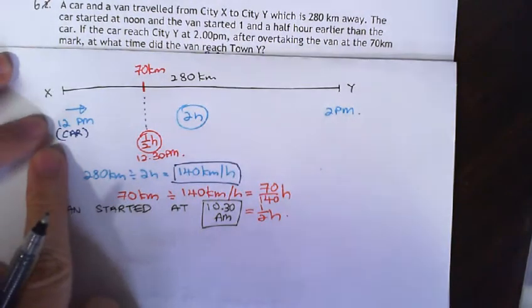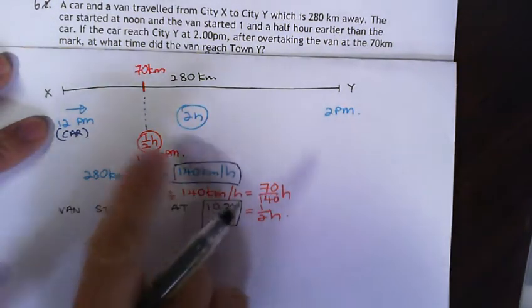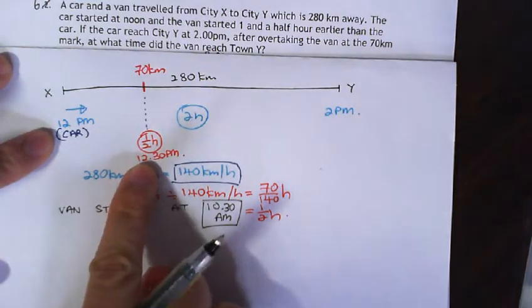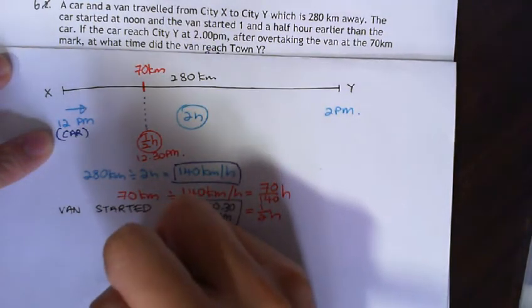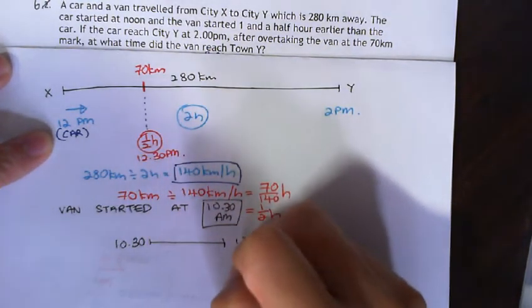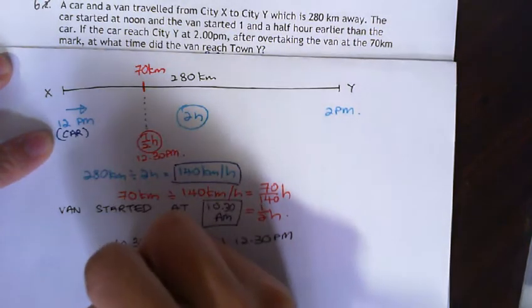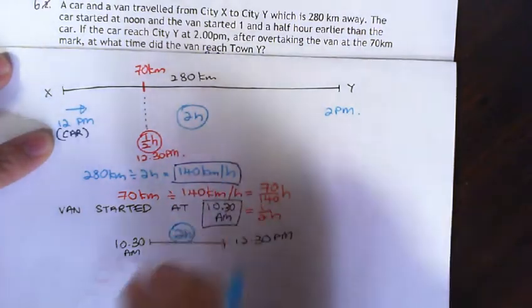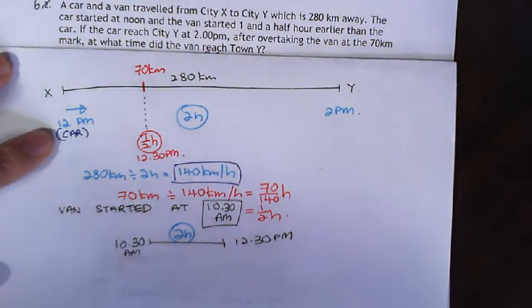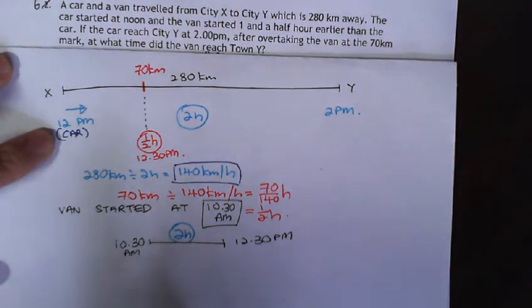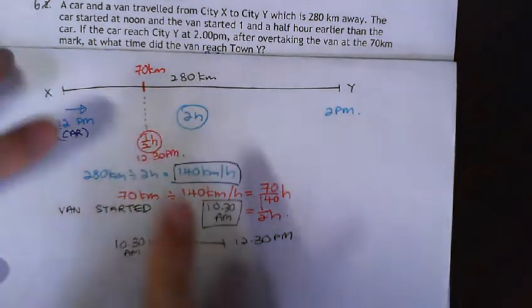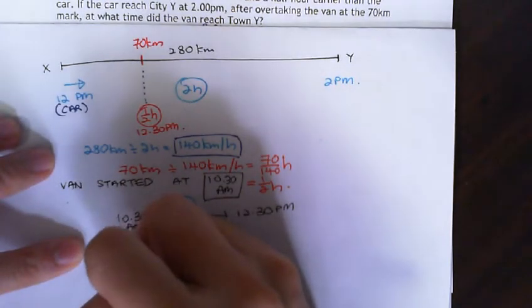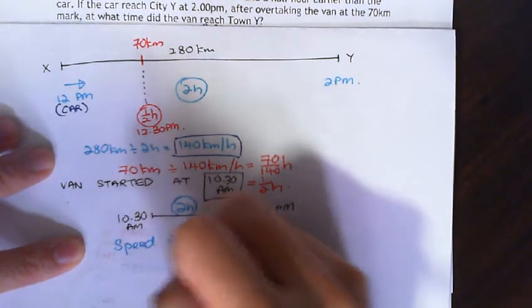But the car overtook it at 12:30. So 10:30 to 12:30, the difference is actually two hours. So from this, I can find very important information, which is this: the van actually took two hours to travel 70 km. So the speed of the van is 70 km divided by 2 hours, which equals 35 km per hour.